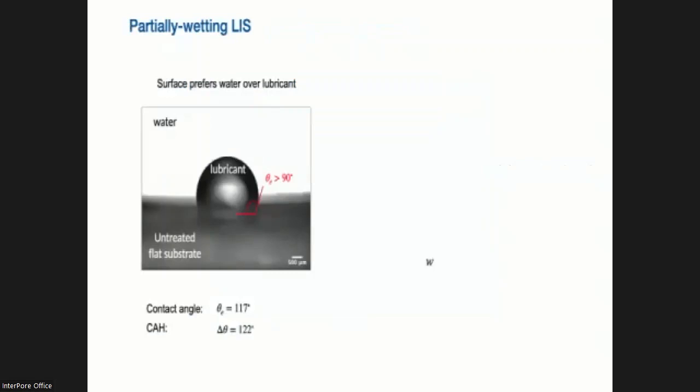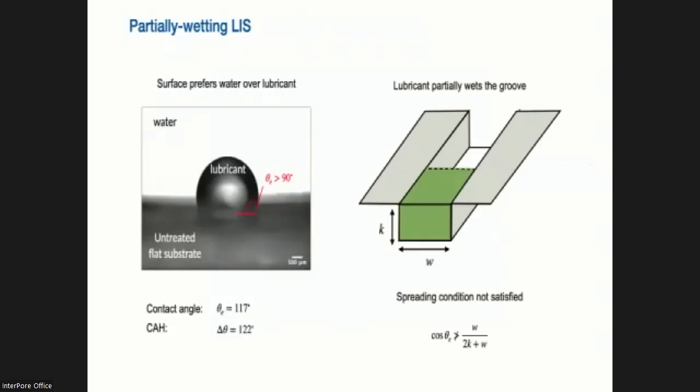But we thought, why don't we try to break the rules and create a lubricant that does not wet the surface. So we created a surface where the lubricant only partially wets the surface, or actually the contact angle is larger than 90 degrees, so the surface prefers water over the lubricant. And we also have a very large contact angle hysteresis here, around 122 degrees. So in this case, the spreading condition is not satisfied, which means that the lubricant will not spontaneously invade the groove.